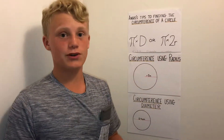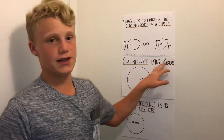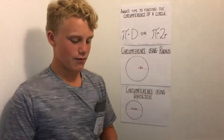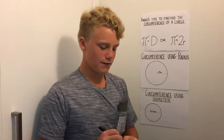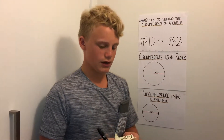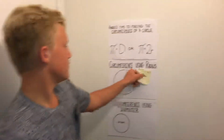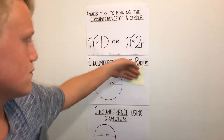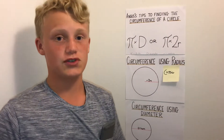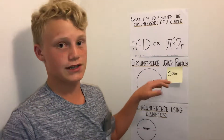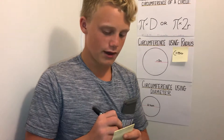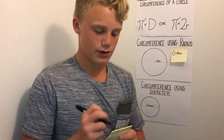Let's get straight into it. The first method is using radius. The formula is circumference equals pi times 2r. Now we have to rewrite the formula substituting in the circle's radius, which would equal pi times 2 times 3.